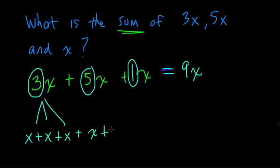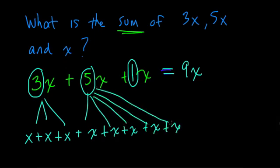5x means a number added 5 times, right? 2, 3, 4, 5. That's 5x, 3, 4, 5, and then just 1x or x.